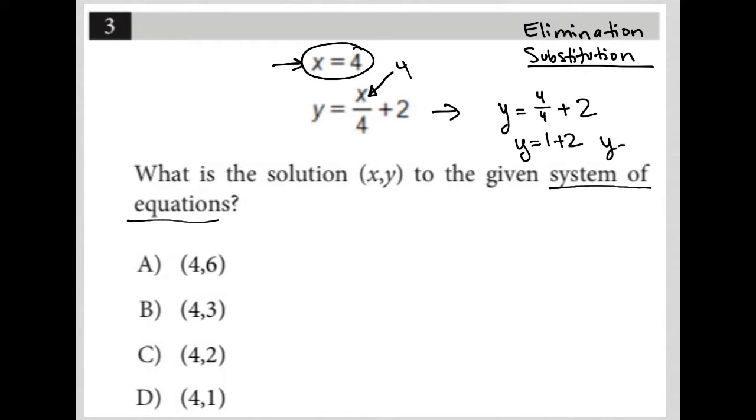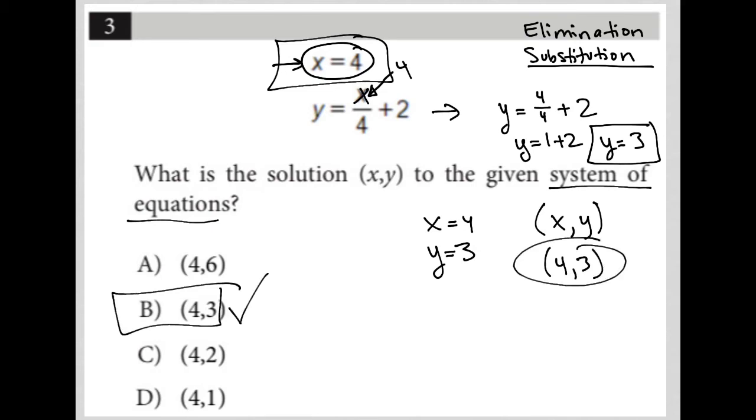So now we know that x equals 4 because we were given that from the top equation, and we know that y equals 3 because we found that by plugging 4 into the bottom equation. As an ordered pair answer, which is always represented in (x, y) format, we know that our answer would be (4, 3), and therefore the correct answer is choice B.